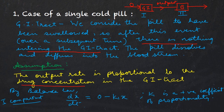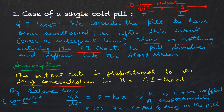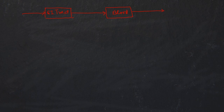Our initial condition is x(0) = x₀, where x₀ is the amount of drug in the pill. Because we have already swallowed the pill, there is some amount of drug in it — that is our initial condition. Now let's talk about the second compartment, the bloodstream.